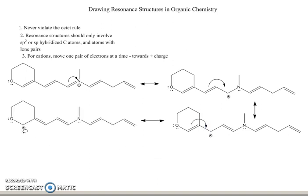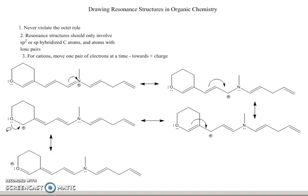And finally, I can draw one more resonance structure where I move this lone pair of electrons towards the positive charge, as shown by this arrow, to give me this resonance structure.